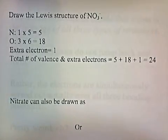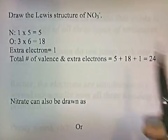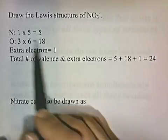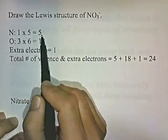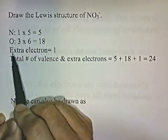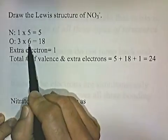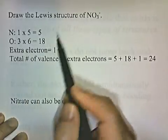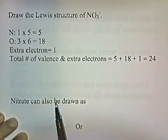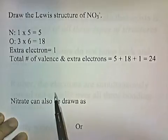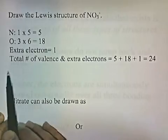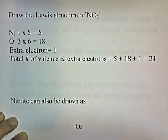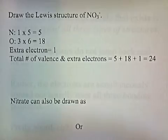Draw the Lewis structure of nitrate, NO3 with a negative 1 charge. One nitrogen contributes 5 valence electrons. Three oxygens, each contributing 6 valence electrons, gives 18. The negative 1 charge means there is 1 extra electron. The total number of valence and extra electrons is 5 plus 18 plus 1, which gives 24.